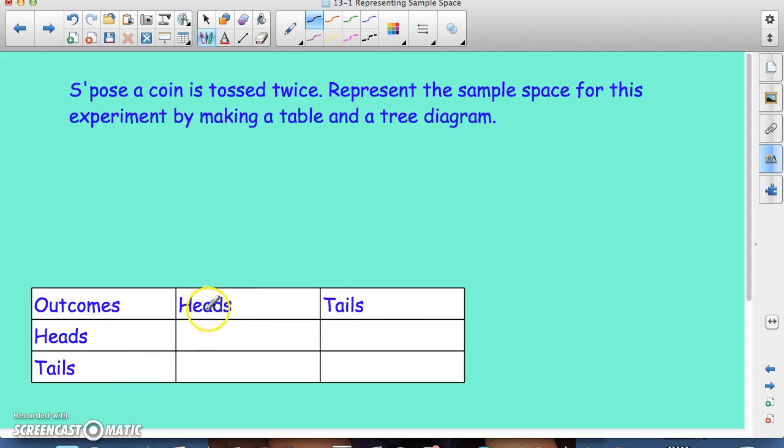So what can you get? What are the possible outcomes? You could get heads and heads here. You could get tails and heads. You could get heads and tails. And you could get tails and tails. So this would be your sample space. These are the possible outcomes, all the possible outcomes that you could get.